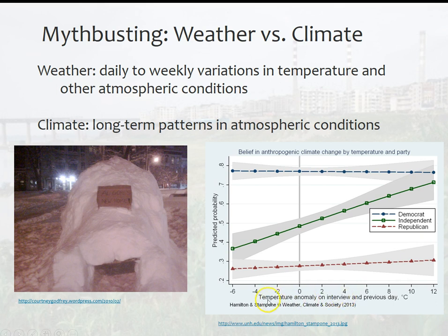What gets really interesting is they also noted the temperature anomaly on the day of the interview — whether it was warmer or colder than usual. Zero means the same temperature as it should be. Further to one side means it was warmer than expected that day; the other direction means it was colder than expected.